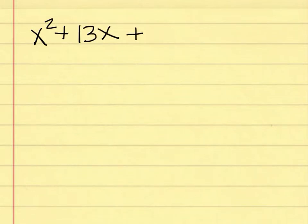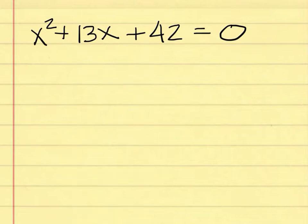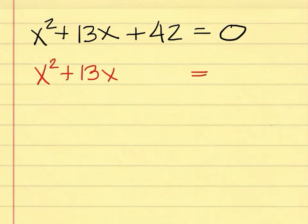Here's another example done as a class Q&A. The problem is x squared plus 13x plus 42 equals 0. We're doing this with fractions — if you want to use decimals on your homework, that's fine, but in class we'll use fractions. The first thing to do, as a student answers, is to move the 42 to the right-hand side. That gives us x squared plus 13x equals negative 42.